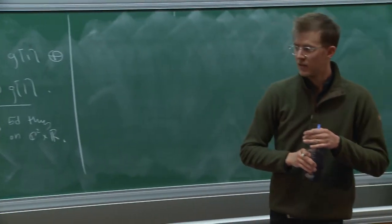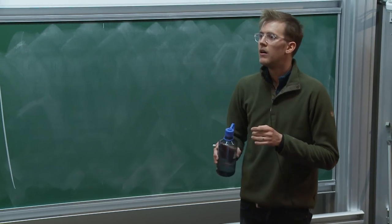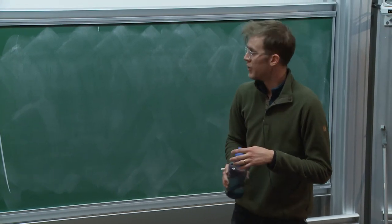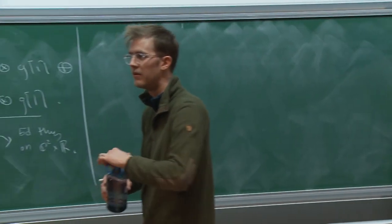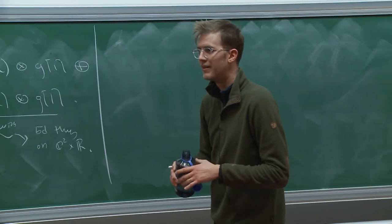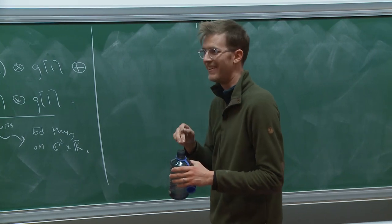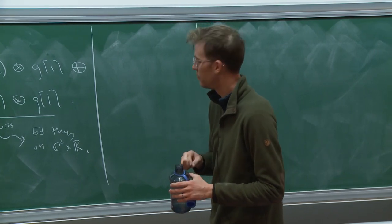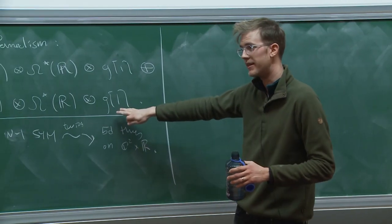Is this 5D N=1 with pure gauge or matter? Just pure Yang-Mills, no matter. If you add matter representations, yes there's a similar twist — you'd throw in representations on one side of the BF theory.